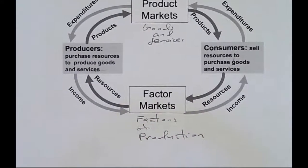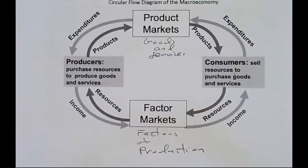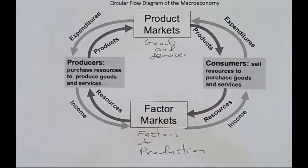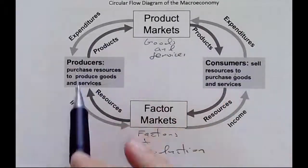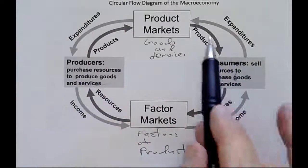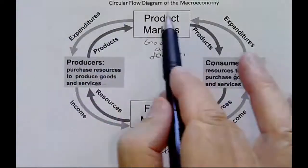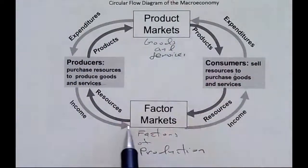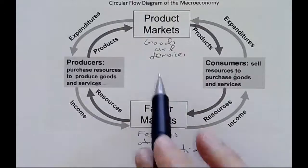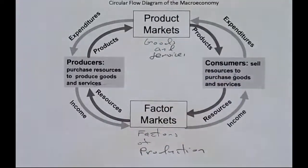So the flows themselves — the major flows — represent macroeconomics. These arrows are macroeconomics, and in the boxes is microeconomics.